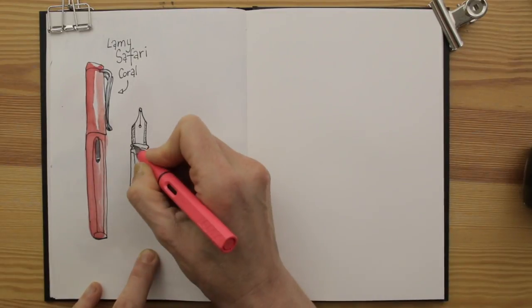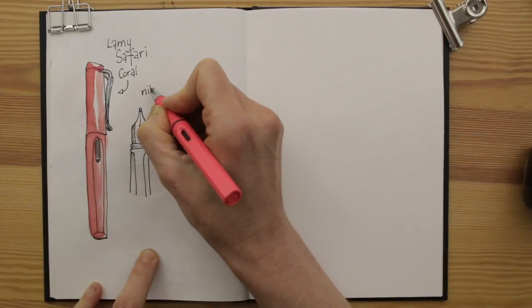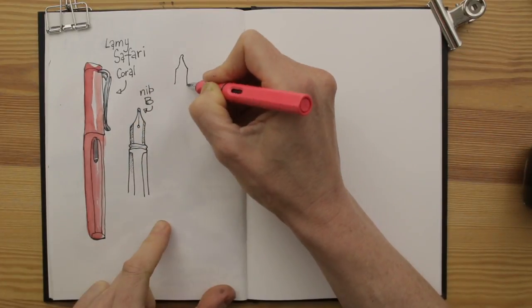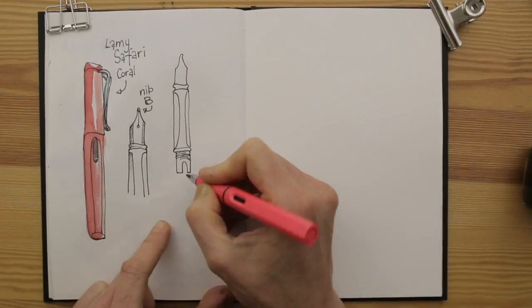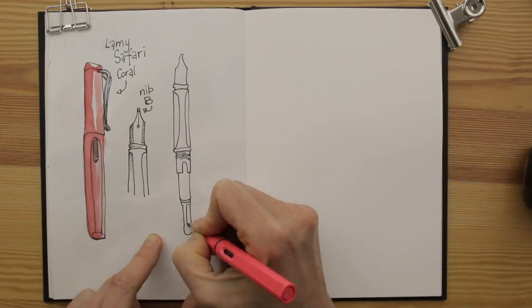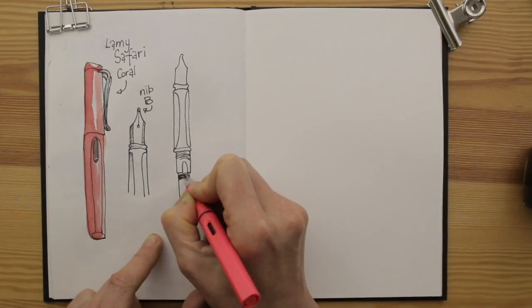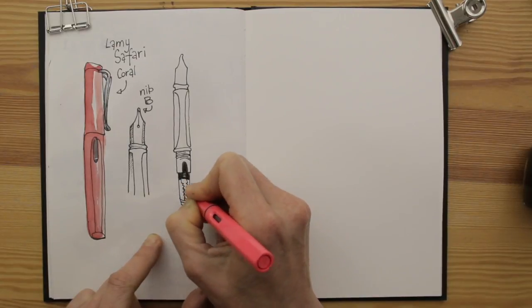I have all sizes, but use my coral pink Lamy with broad nib most often. It allows me to use bold lines, and when I turn the pen upside down, I can draw very thin lines, especially helpful for hatching shaded areas.